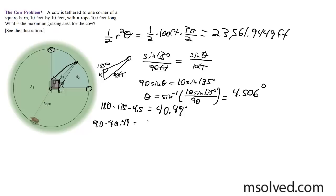So that's going to be 90 minus 40.49, which gives me 49.506 degrees. Now what I do, now that I have this angle here, I know I can find the area, so it's going to be 1/2 of 90 squared times 49.06.